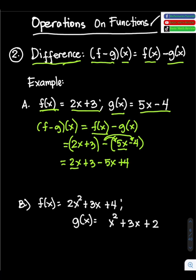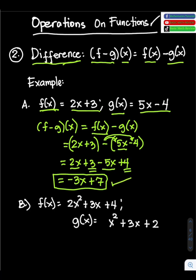Then combine like terms. The like terms are 2x and negative 5x. So 2x minus 5x equals negative 3x. Then positive 3 and positive 4 is positive 7. So this is our final answer: the difference of the given functions is negative 3x plus 7.